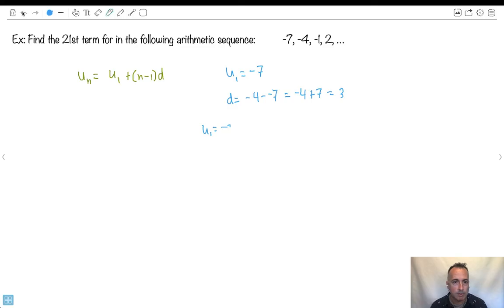So I'm adding 3 to it. Let's see if it works for the other one. So -1 minus -4, that'll also give you 3. 2 minus -1 is going to be 2 plus 1. That also gives you 3. So in this case here, I know then that U1 equals -7. I know that one. And I know that d equals 3. That's also going to be important.